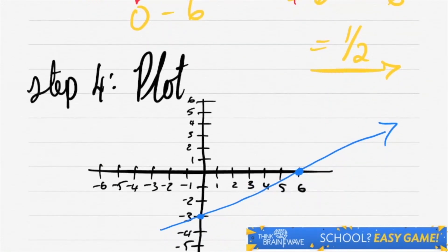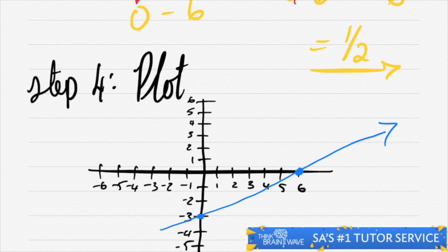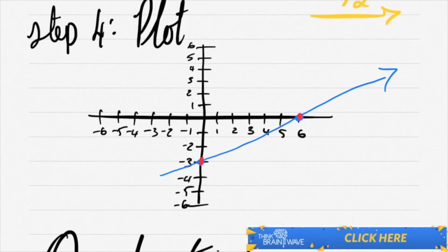Now let's plot. So your first point would be (0, -3) and your second point would be (6, 0) over here. You plot the function. It looks like this.